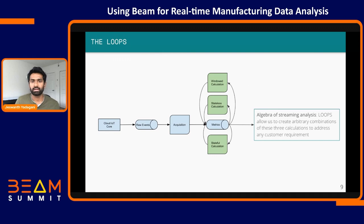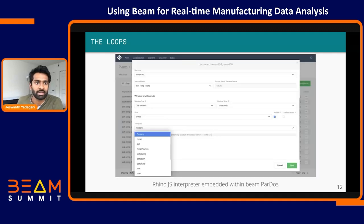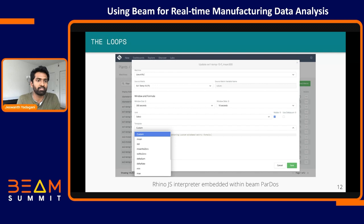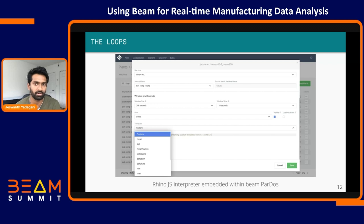These three Beam jobs, combined with our recursive loop architecture, allow us to create arbitrary combinations and realize complete algebra on streaming metric calculations. In the platform we select a source metric, configure window size and slide, and choose from templates of useful functions. We also support custom functions: for that purpose, we have embedded a Rhino JavaScript interpreter within the Beam pipeline.